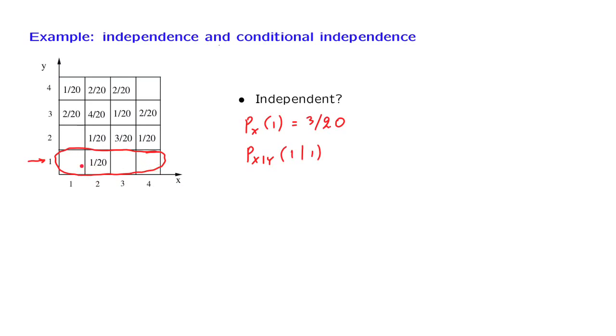In this universe, there's 0 probability associated to this outcome. So this probability is 0, which is different than 3 over 20.